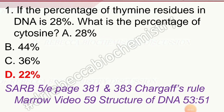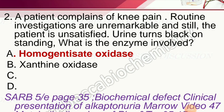Question 1: If the percentage of thiamine residues in DNA is 28%, then what is the percentage of cytosine? Options are 28%, 44%, 36%, and 22%. The answer is 22%.